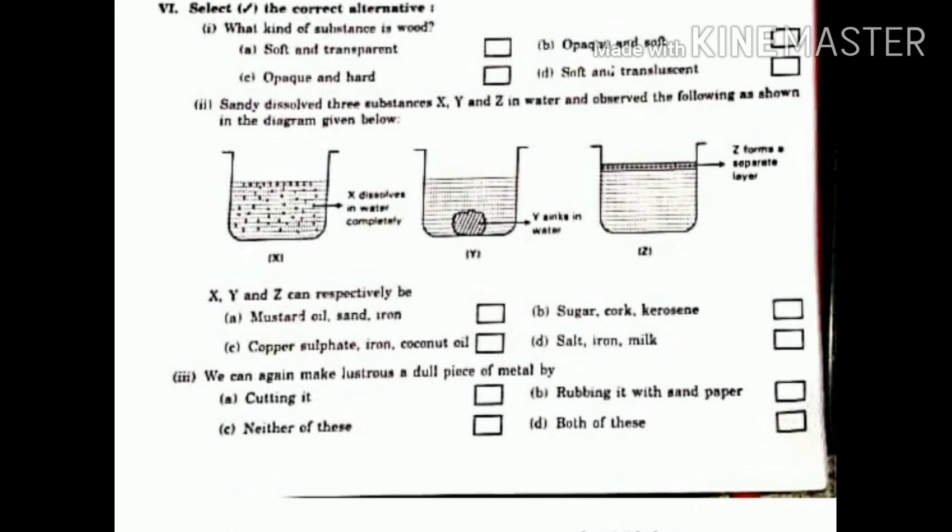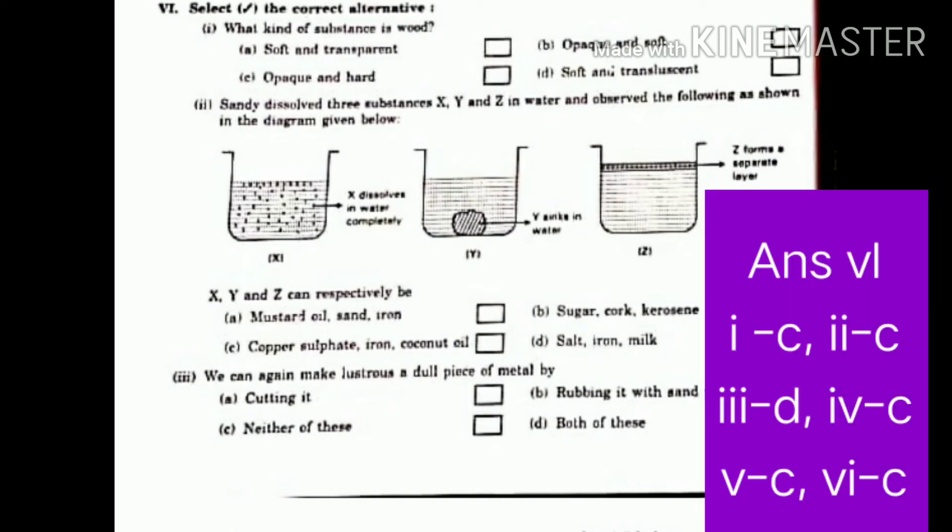Sixth. Select the correct alternative. First. What kind of substance is wood? Answer C. Opaque and hard. Second. Sandy dissolved three substances X, Y and Z in water and observed the following as shown in the diagram given below. Answer. C. First one is copper sulfate, then iron, then coconut oil. So correct answer is C.